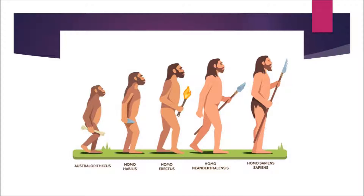We have seen about the Paleolithic period, which is called the old stone age. In this stage, humans were nomads and food gatherers. They hunted wild animals and fish and gathered fruits.